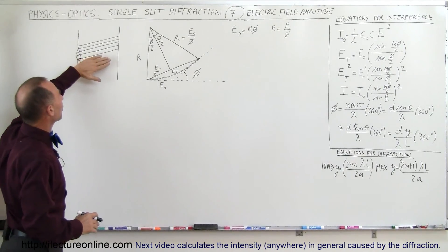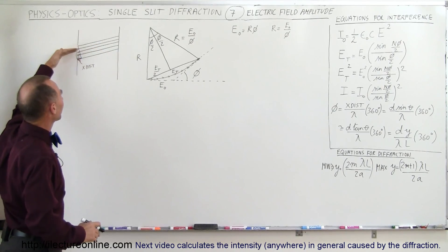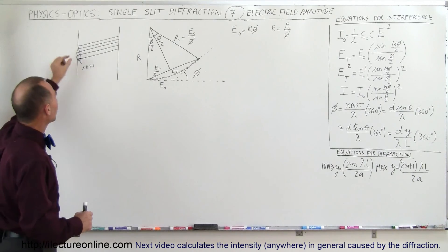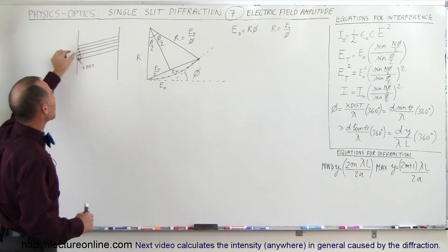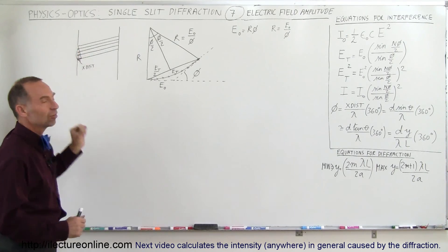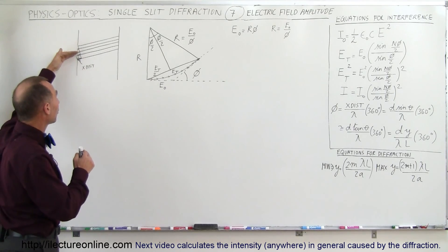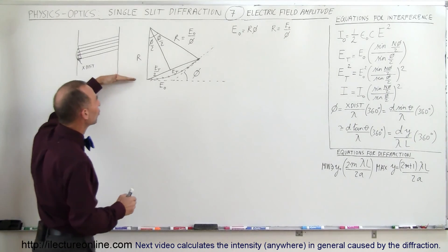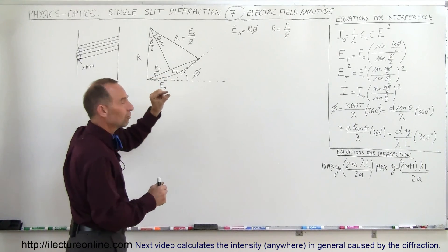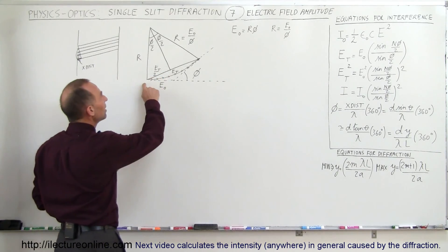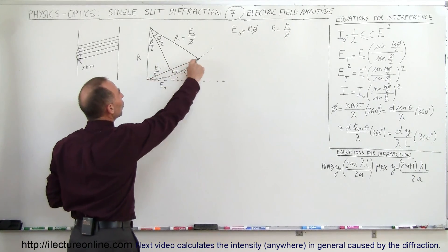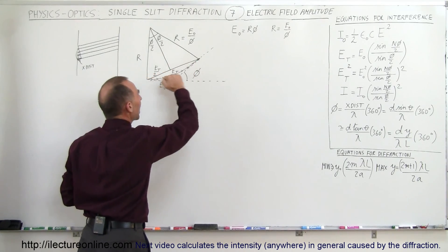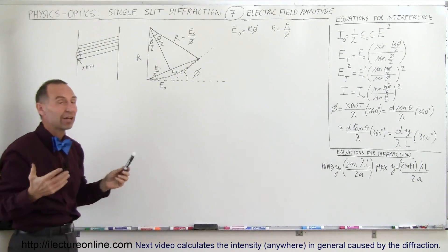But if you look at any point above or below the central maximum, the different portions of the beam have to travel different distances, so each successive portion has a greater exit distance that must be traveled. Because of that, all the individual portions of the beam are going to be out of phase by some amount. If we add those phases together — those individual pieces of beam — the total electric field amplitude would be the line directly across from start to end, because we do what we call a vector addition.